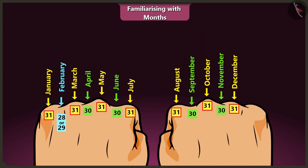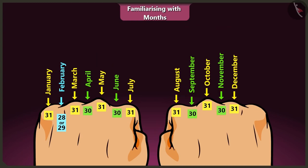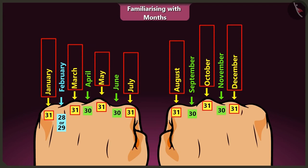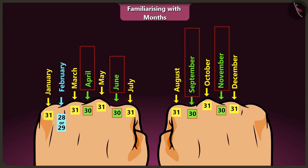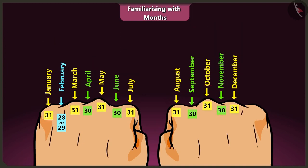Very good Chotu. There are 30 days in 4 months: April, June, September and November. Just remember: months with 30 days are 4, and there are 7 months with 31 days. Uncle, there are 4 months of 30 days and 7 months of 31 days, and February is the month of 28 or 29 days.